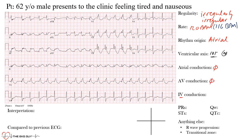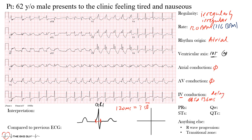Next is intraventricular conduction. Normal QRS duration is less than 120 milliseconds — that equals three small boxes on the EKG grid. The machine gave us a QRS duration of 136 milliseconds, which is prolonged. So we have a delay in intraventricular conduction, and we'll soon see the reason for that.